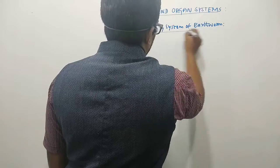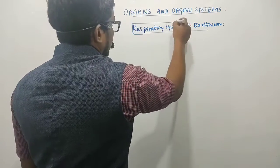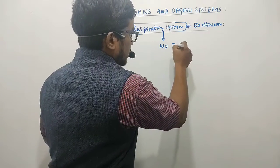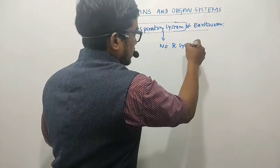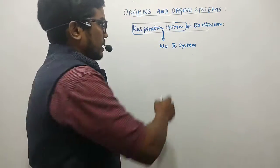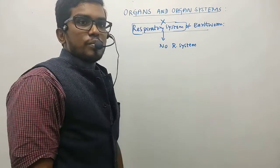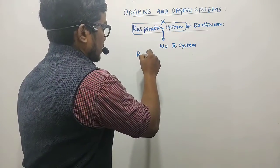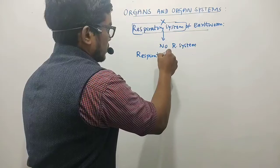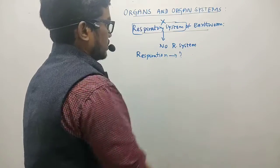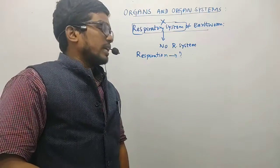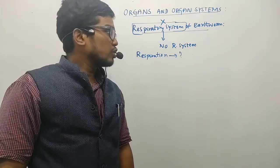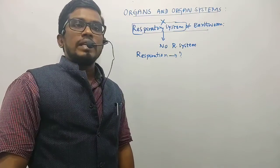In the earthworm, there is no respiratory system present — there is an absence of a respiratory system. So how does respiration occur? They need respiration to obtain oxygen for various metabolic activities, so how does it actually occur?